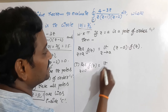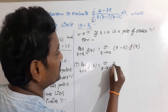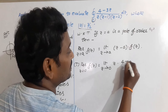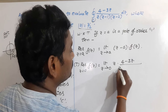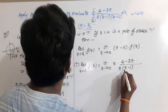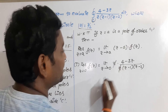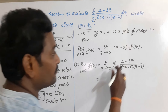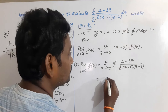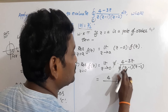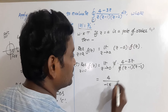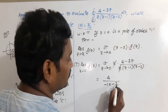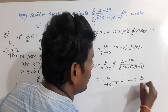First, find the residue of f(z) at the pole z = 0. This equals the limit as z → 0 of z · [(4 − 3z) / (z(z−1)(z−2))]. The z factors cancel, and replacing z with 0 gives 4 / [(0−1)(0−2)] = 4 / (−1)(−2) = 4/2 = 2. So R₁ = 2.